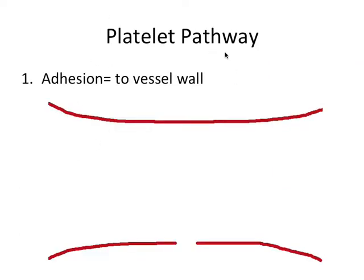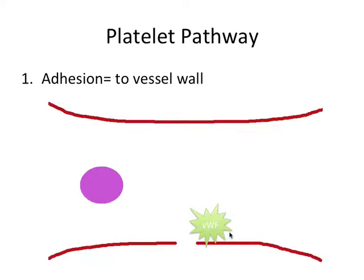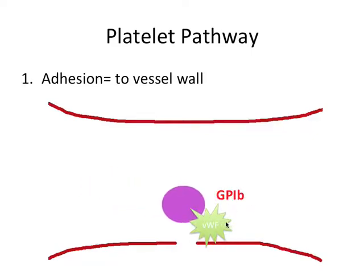For the platelet pathway, the first step is adhesion, where platelets have to adhere to the vessel wall. Endothelium lines the inside of each blood vessel, and endothelial damage causes the release of von Willebrand factor from the endothelium. We have platelets — these little purple circles — and when we have damage, von Willebrand factor is expressed and released from the endothelium, which then attaches to circulating platelets via glycoprotein 1b. So now the platelets are adhered to the endothelium.